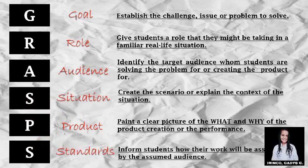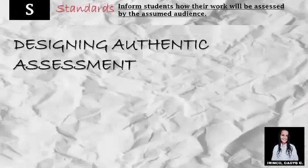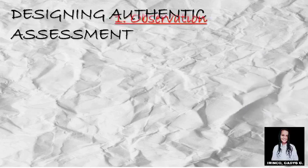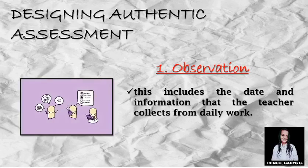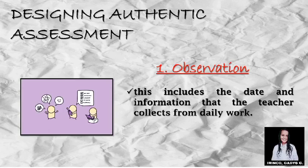There are three modes of authentic assessment. The first one is observation. This includes the data and information that the teacher collects from daily work. The teacher will conduct an observation of the students, observing their performance and attitude during and after class. After the observation, the teacher can identify the weaknesses and strengths of the students. The role of the teacher is to assist students and help them improve. Two observation-based assessment tools are: the developmental checklist — an observation tool requiring the teacher to describe the traits or learning behaviors being assessed — and the interview sheet, also called the conference recording form.